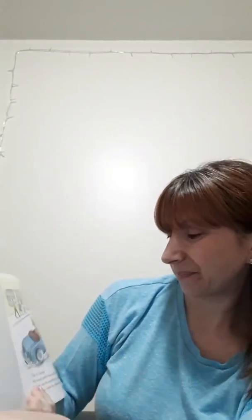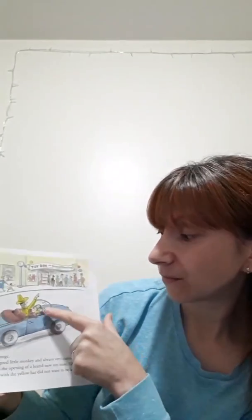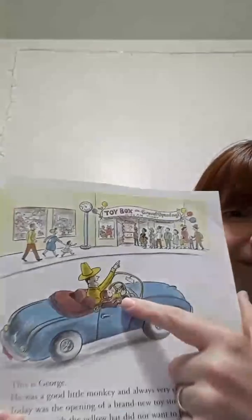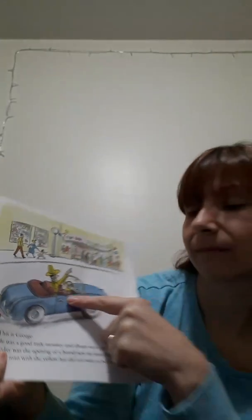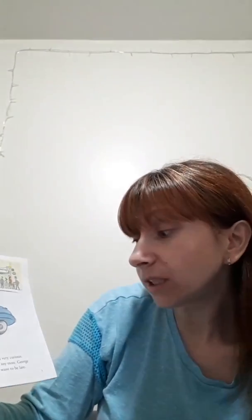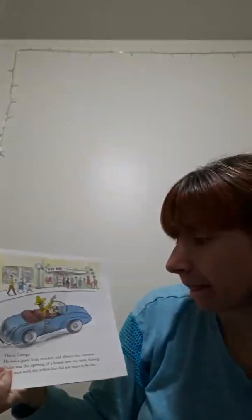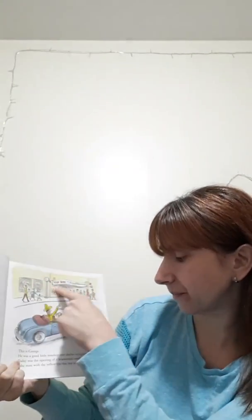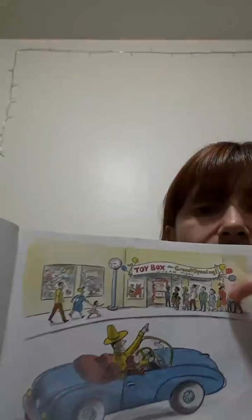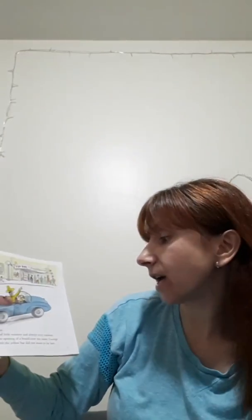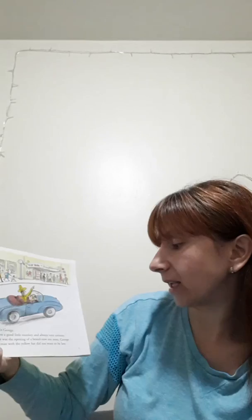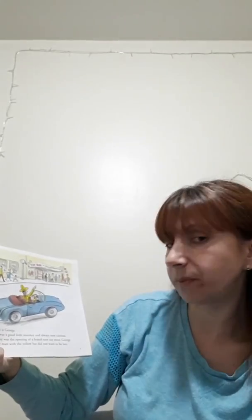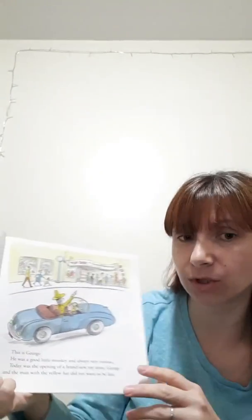The author, that's who wrote the book, is Margaret Ray. So let's see, are you ready to start? This is George. George was a good little monkey and always very curious. Today was the opening of a brand new toy store. George and the man with the yellow hat did not want to be late. They didn't want to miss anything.